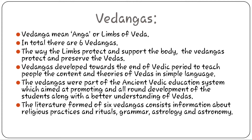The next topic is Vedangas. Vedanga means Anga — Limbs — the Limbs of the Veda. We have a total of 6 Vedangas. The Vedanga literature deals with religious practices and rituals, grammar, astrology and astronomy. It is part of the ancient Vedic education system which aimed at promoting all-round development of students along with a better understanding of Vedas.